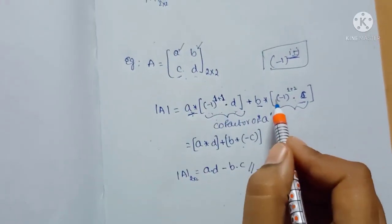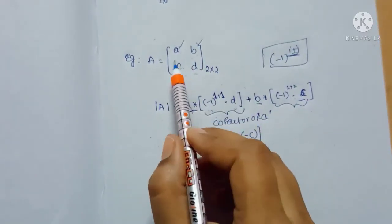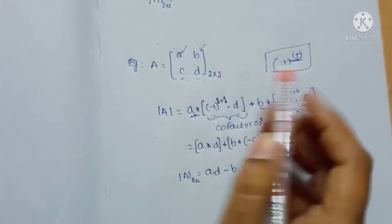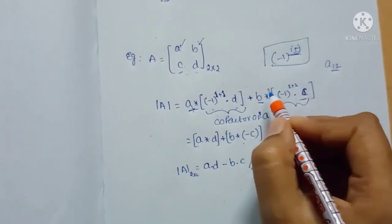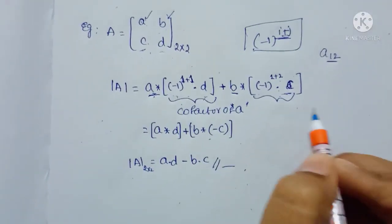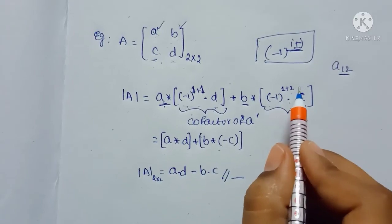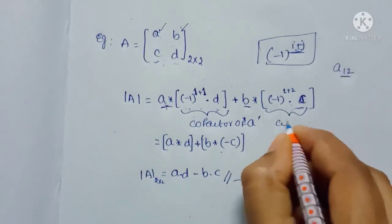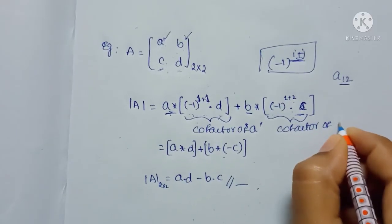If you multiply with minus 1 to the power I plus J, then this is first row and second column, so I and J are 1 and 2. If you multiply with minus 1 to the power I plus J, then you get the cofactor of B.